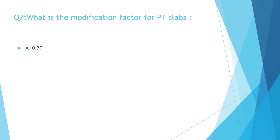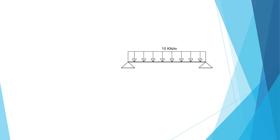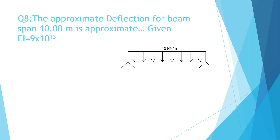Question Number 7: What is the modification factor for post-tension slabs? A. 0.7, B. 0.35, C. 0.25, D. 0.5. The correct answer is D. 0.5.